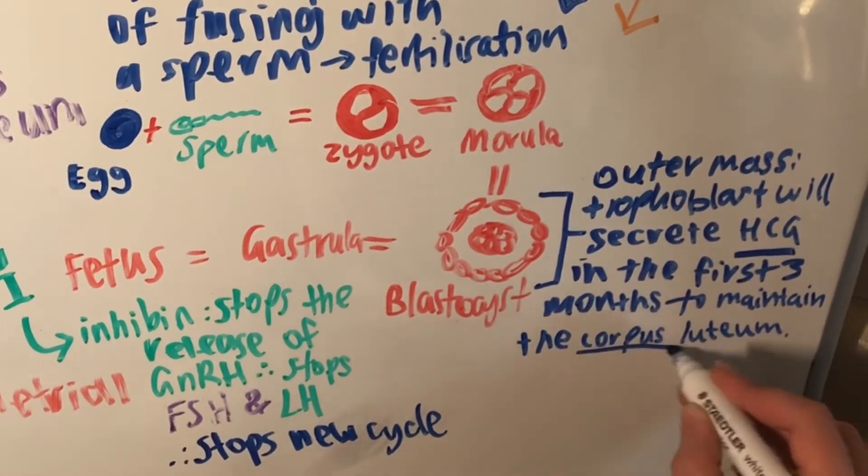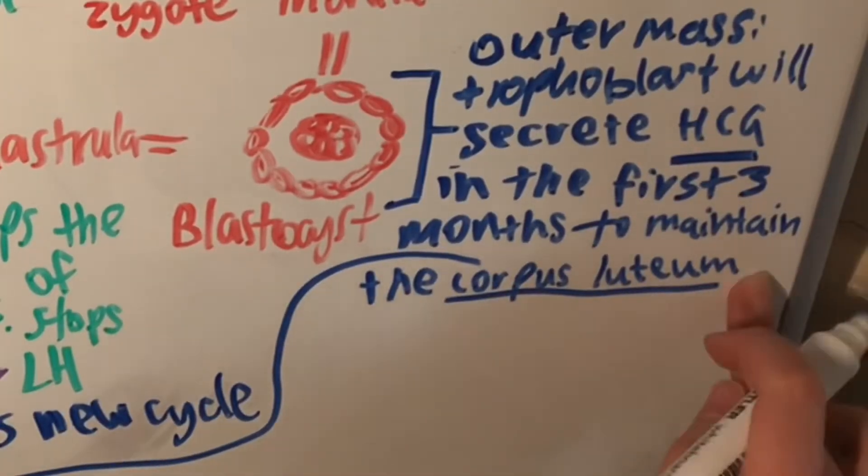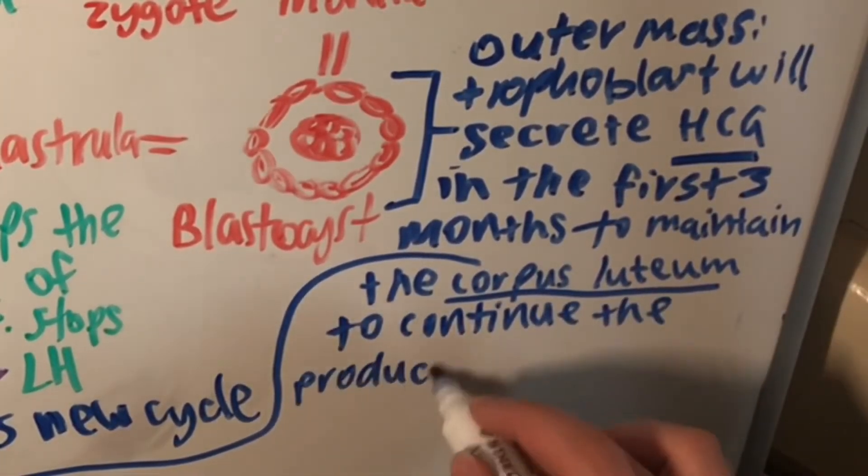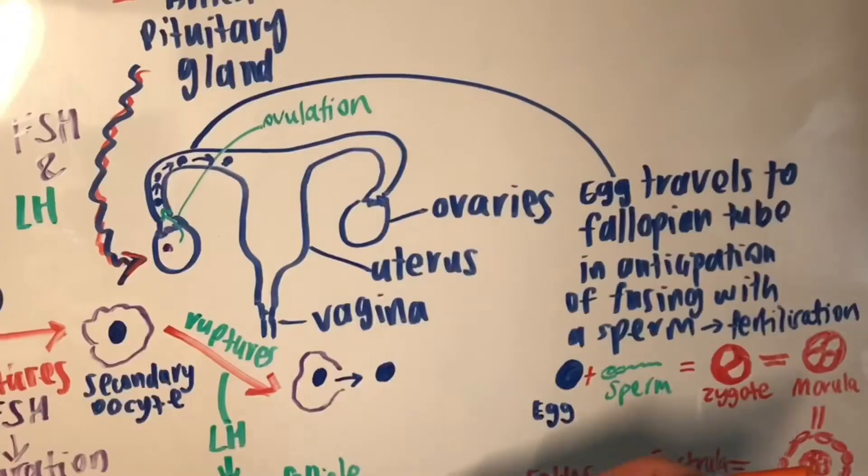This maintains the corpus luteum in the first few months. Hence, the production of progesterone and estrogen can continue. This is important for preventing a miscarriage if the endometrial lining is not maintained.